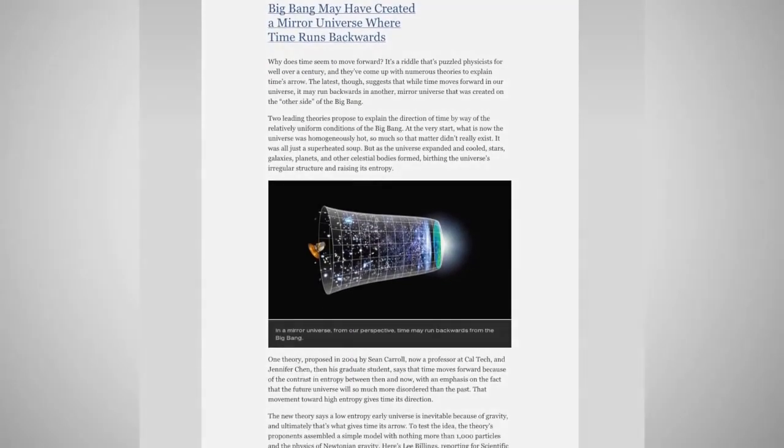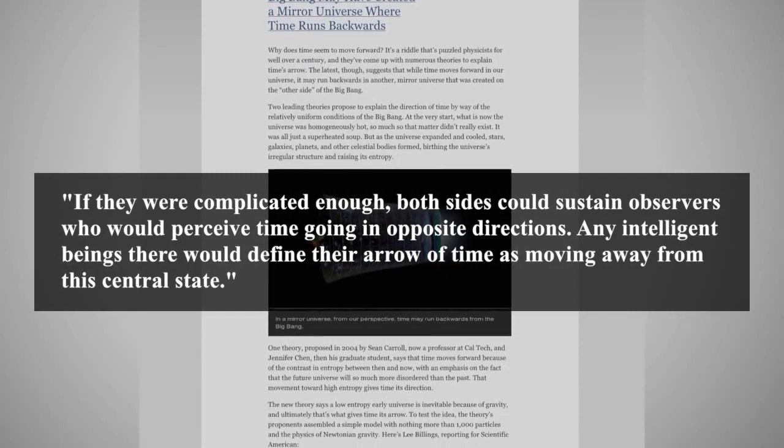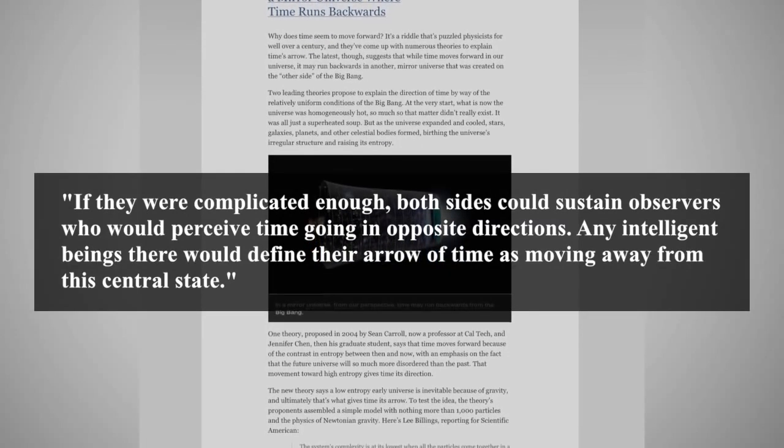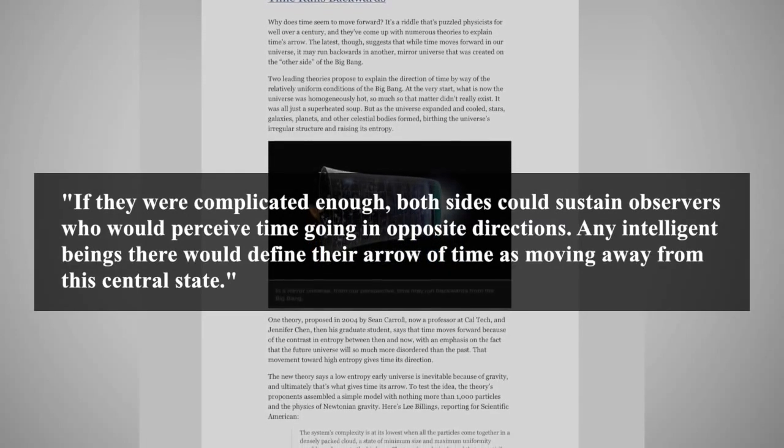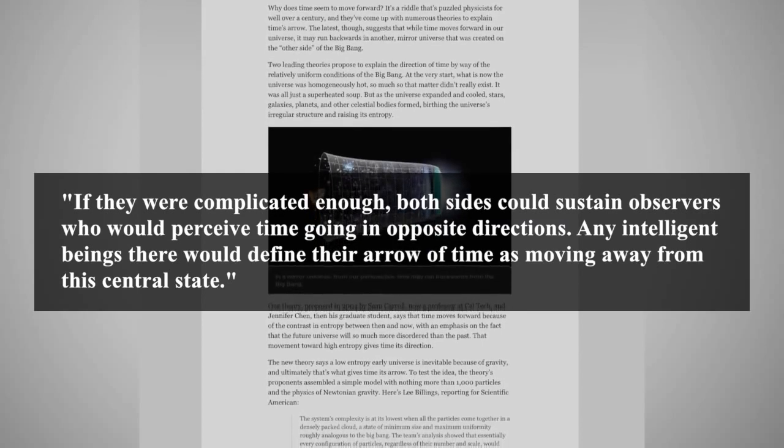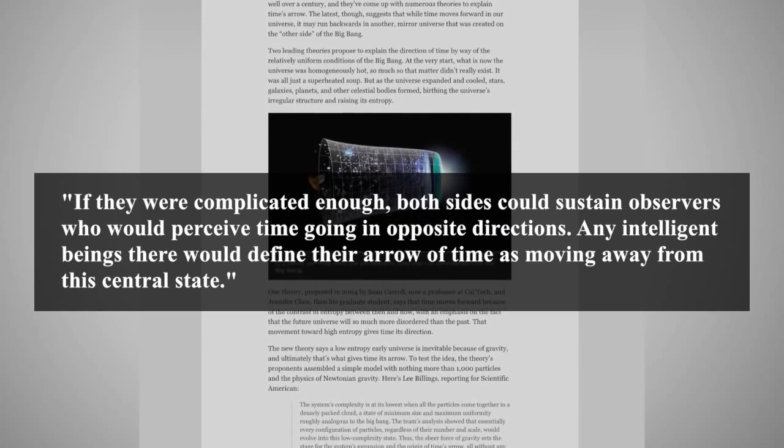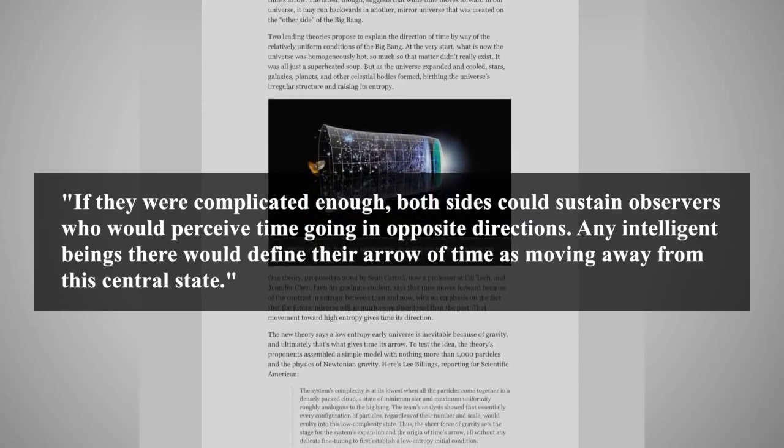Barber explains the findings by saying, If they were complicated enough, both sides could sustain observers who would perceive time going in opposite directions. Any intelligent beings there would define their arrow of time as moving away from this central state.